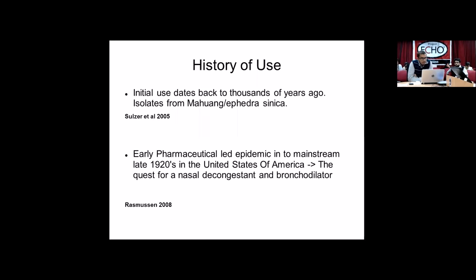The initial use of amphetamines is dated back quite a few thousand years ago, isolated from Mahuwang or Ephedra Sinica, which is a natural source. Following this, in the US they were in a quest to find an alternative for ephedrine, so they developed amphetamine. Subsequently, it was a pharmaceutical-led epidemic that came into the Americas — they started giving people amphetamine inhalers, primarily to relieve nasal decongestion and use as a bronchodilator.